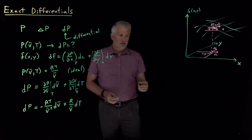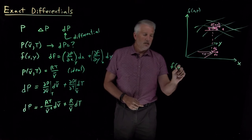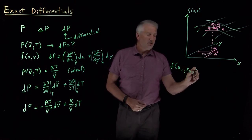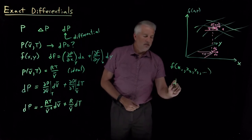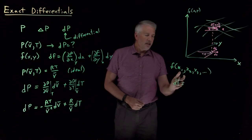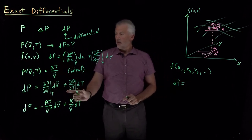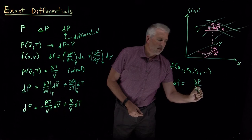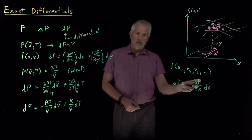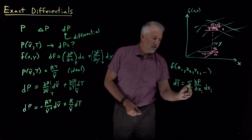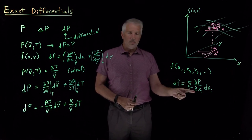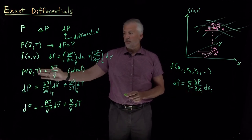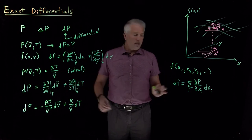Before concluding, one more point: we'll encounter cases with more than two variables. If we have a function that depends on many variables x₁, x₂, x₃, and so on, then the differential of f has a term for each variable: (∂f/∂x₁) dx₁ + (∂f/∂x₂) dx₂ + ···. It's the sum of the rate of change of the function with respect to each variable multiplied by the change in that variable, summed over all variables.